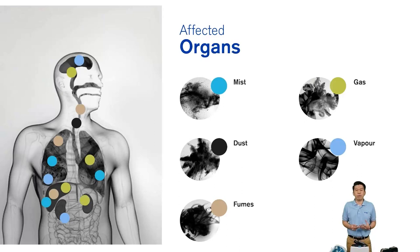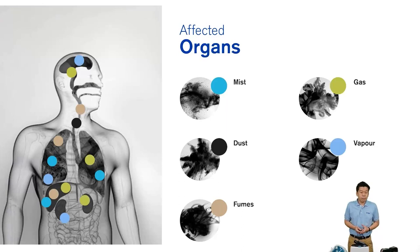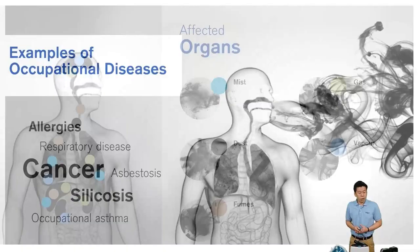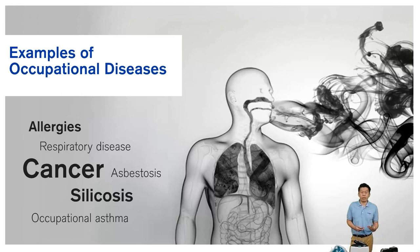Once we inhale these substances, they affect various organs, as shown in the pictures. Most of the time, gases and vapors will affect not just our lungs but also other organs like the brain and liver. Solid particles or aerosols will mostly affect our lungs. Examples of what this causes include cancers and silicosis. Many occupational diseases accumulate in the body, especially in the lung area, over time. You might not notice the damage within the first few years, but as you age, it will affect your body.